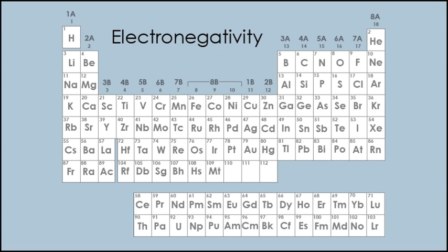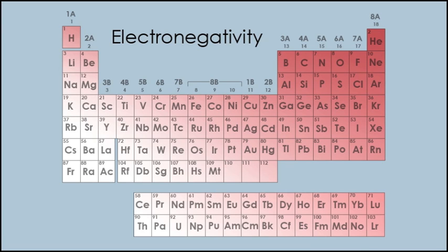Electronegativity is the ability of an atom to attract electrons to itself. Noble gases aside, the atoms on the right side of the periodic table are close to filling their valence shells, and thus have high electronegativity in comparison with those on the left. The trend in electronegativity is that, in general, it increases the farther up and to the right an element is on the periodic table.